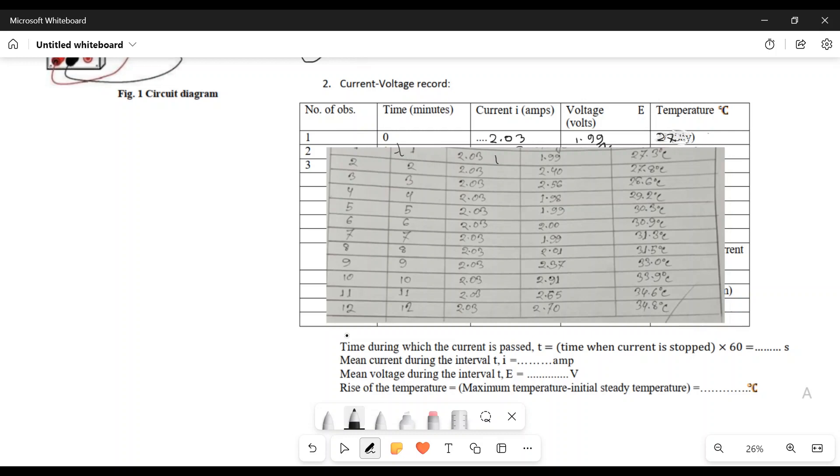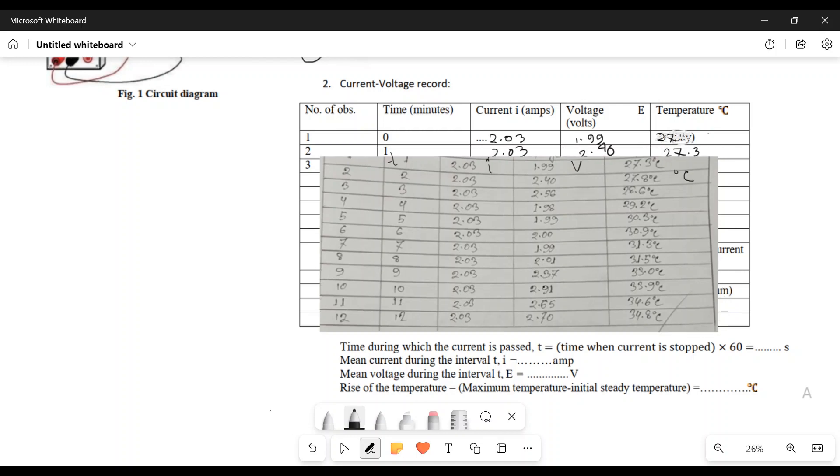This is the rest of the data. The timer, the current, the voltage, and the temperature readings. The water gets distributed through stirring. The temperature of the water rises. We have to record the maximum temperature, which is the highest temperature reached.